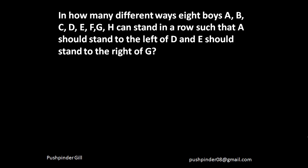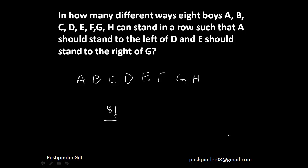In how many different ways can 8 boys a, b, c, d, e, f, g, h stand in a row such that a should stand to the left of d and e should stand to the right of g? The total number of ways they can be arranged is 8 factorial. Now, a should always stand to the left of d, meaning a and d are identical here — you cannot swap them. Half the arrangements have a to the left of d and half have a to the right, so we divide by 2 factorial.